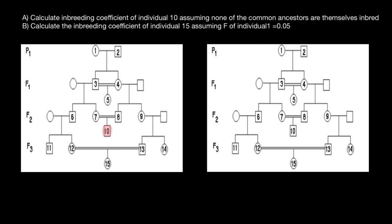We have inbreeding when we have a loop, so take a look at how genetic information may flow here. From individual one to individual three, from individual three to individual seven — who is the mother of individual 10 — and then to individual 10. It can also flow from individual one to four, then to eight, the father of individual 10, and then from father to his son, individual 10.